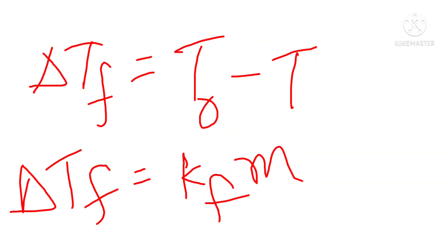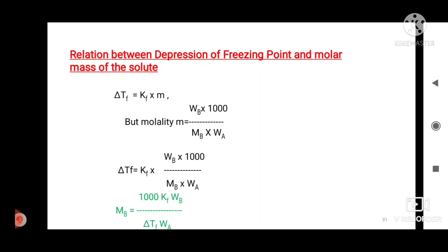The freezing point T of a solution obtained by dissolving a non-volatile solute in a volatile solvent is lower than the freezing point T₀ of the pure solvent. Depression in freezing point: ΔTf = T₀ − T. The depression in freezing point is directly proportional to molality, so ΔTf = Kf × m. The relationship between depression of freezing point and molar mass of solute uses molality = (Wb × 1000) / (Mb × Wa), giving ΔTf = (Kf × Wb × 1000) / (Mb × Wa).